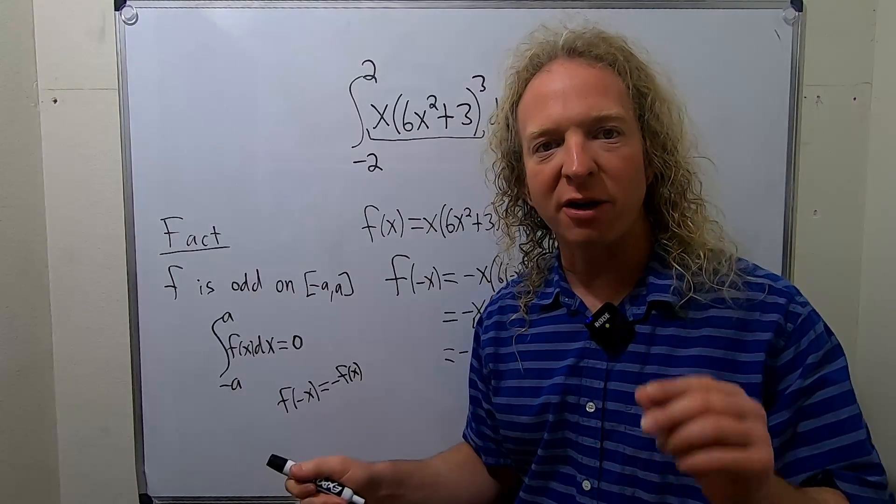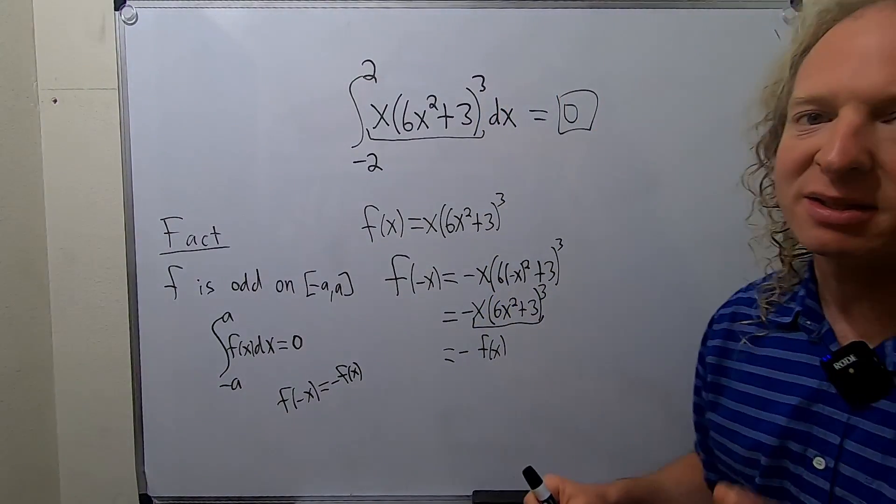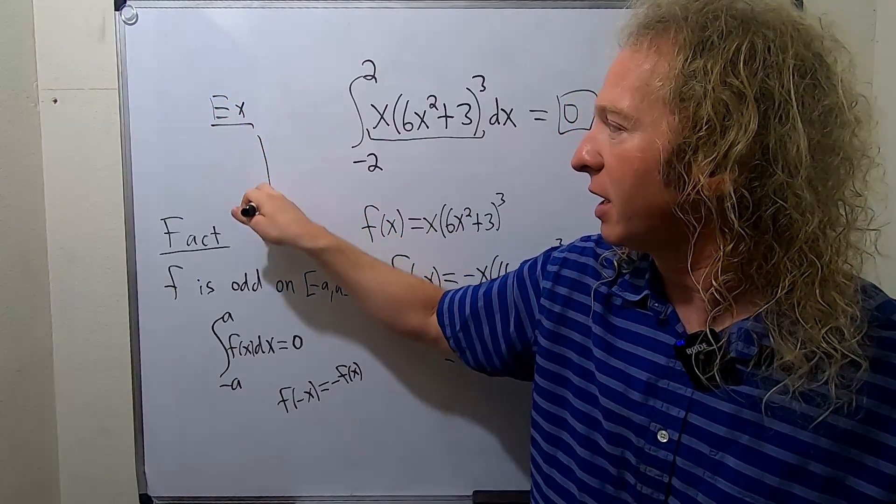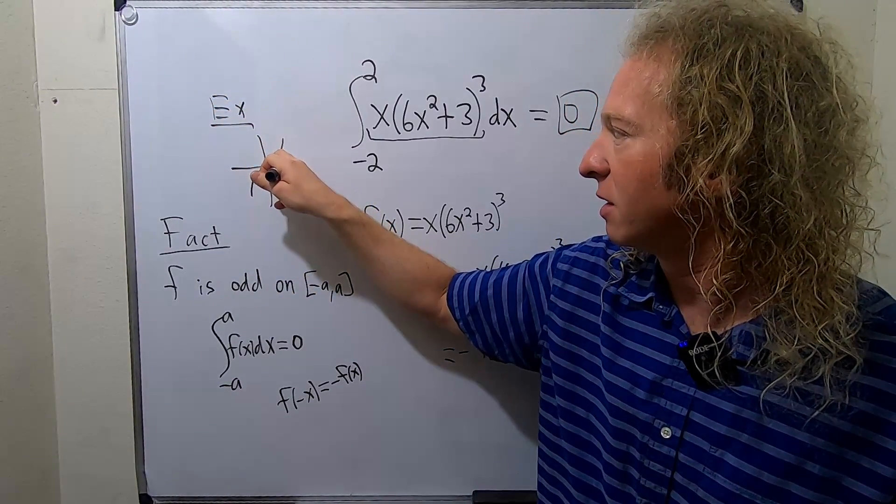What does it mean for a function to be odd graphically? It basically means it's symmetric about the origin. So as a quick example, something like this would be odd.